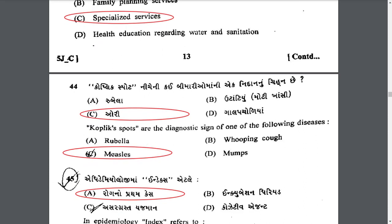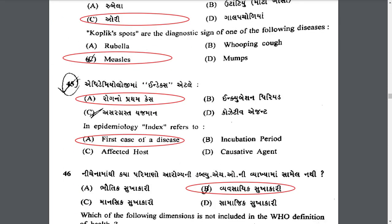Koplik spots are the diagnostic sign of which disease? Koplik spots are the diagnostic sign of measles. In epidemiology, index case refers to the first case of disease — it is the patient in an outbreak who is first noticed by health authorities and who makes them aware that an outbreak might be emerging.